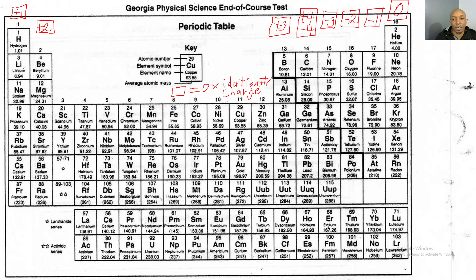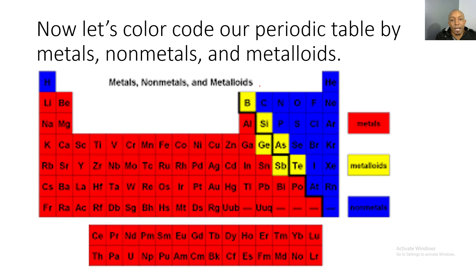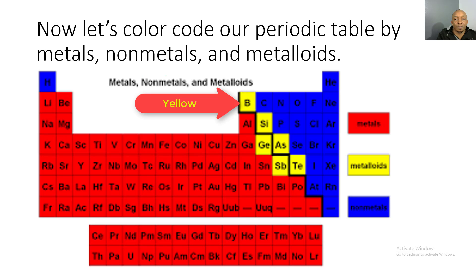I'll give you 10 seconds to complete yours, and then we'll move on to color coding our metals, non-metals, and metalloids. I have the metals colored in red — metals are the most predominant elements on the periodic table. I have the non-metals in blue. And then we have our metalloids, or semiconductors, in a separate color. Go ahead and pause the video now to color code your periodic table by metals, non-metals, and metalloids.